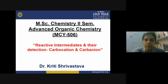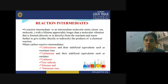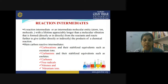Good morning class. Today we are discussing reactive intermediates and their detection, and especially we will discuss the carbocation and carbanion. First of all, let us see what reaction intermediates are. They are the intermediate species formed during a reaction — you start from the reactant, and when the reaction is complete you get the product, and between the reactant and product all the other intermediate species form.